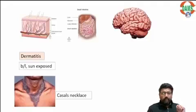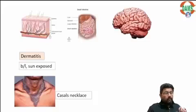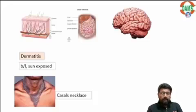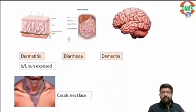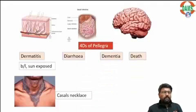You can see the image here — this is Casal's necklace. If intestines are not functioning properly, the patient may experience diarrhea. The four features are: dermatitis, diarrhea, dementia, and death. These are known as the four D's of pellagra.